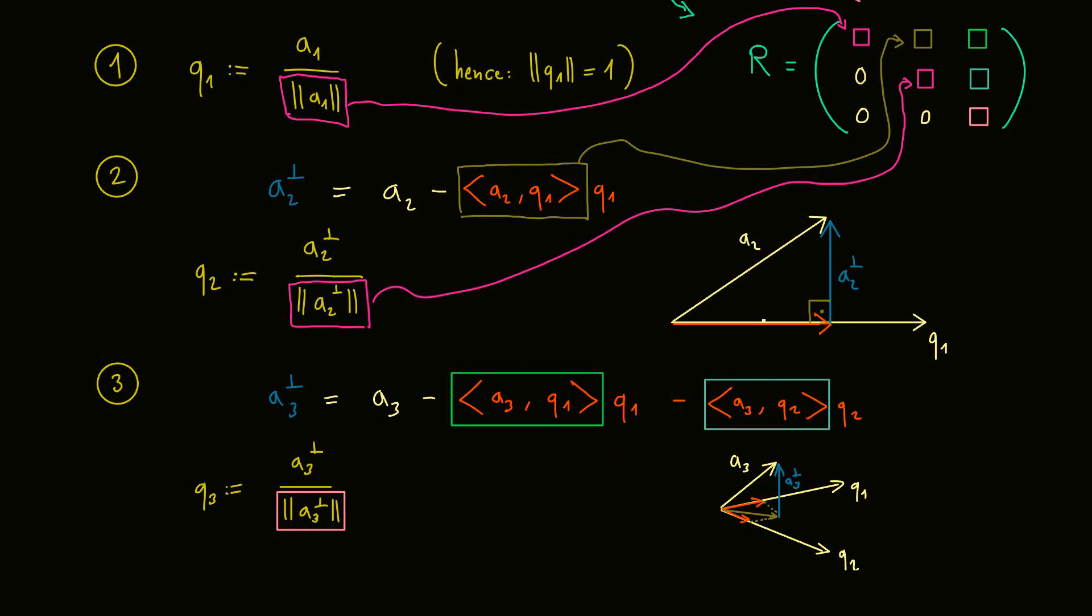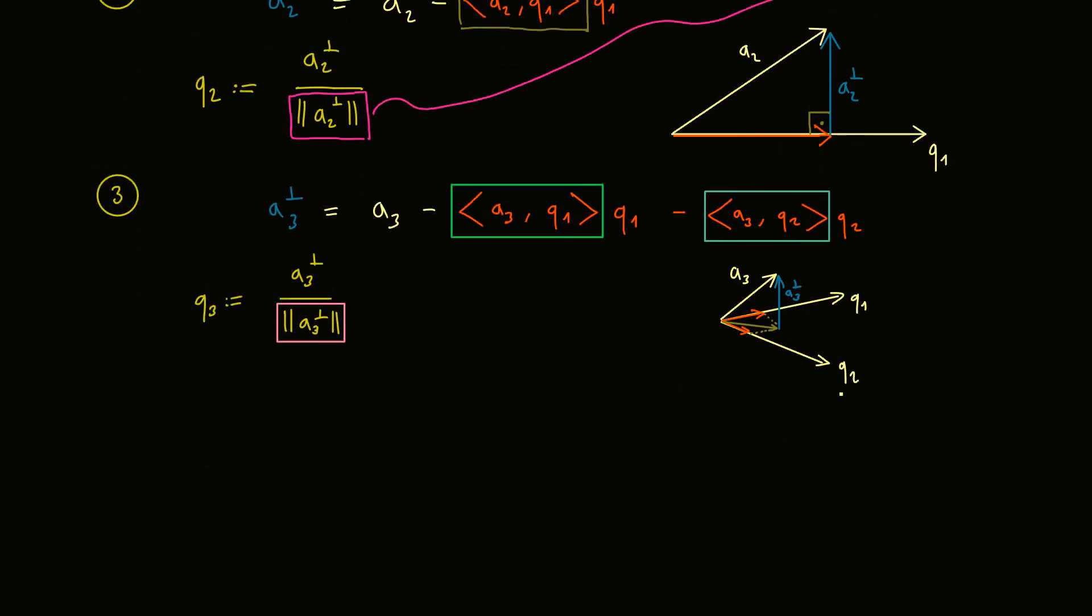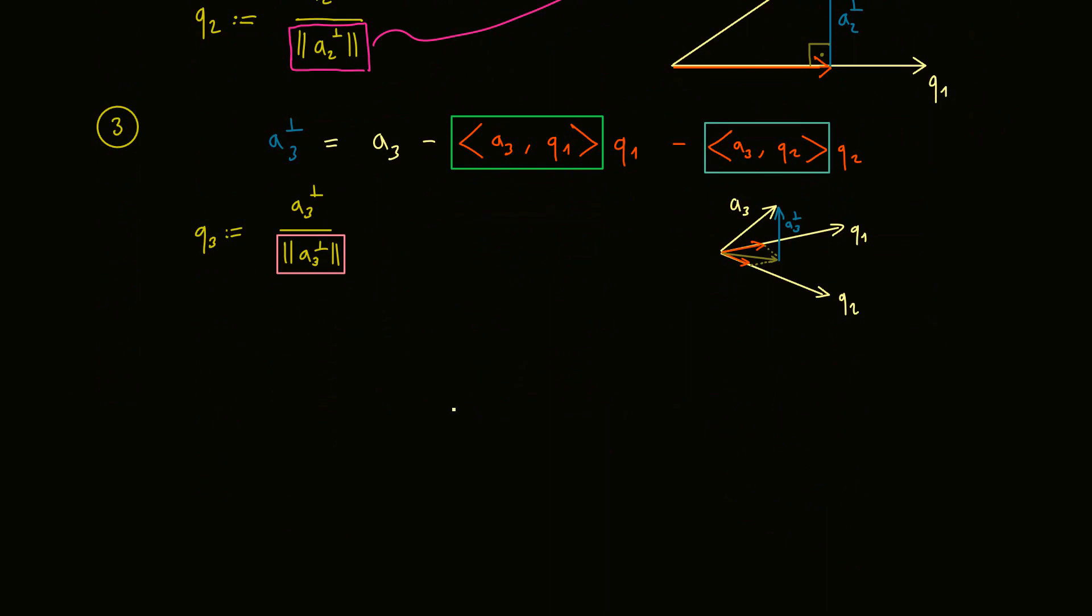And now I want to end this video with a simple example with numbers. However, let's do a quick 2 times 2 example. Okay, so this is our matrix A. And the question is now, what is Q and what is R? Both 2 times 2 matrices.